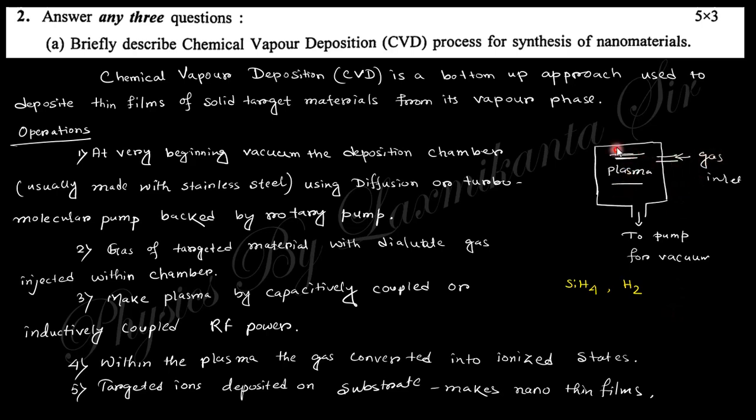Apply the electric field within the electrode and make the plasma state. Then the silane and hydrogen are decomposed and ionized. These silicon atoms are accumulated on the substrate and make the thin film, nano-dimensional thin film. Such a process makes the nanomaterials.